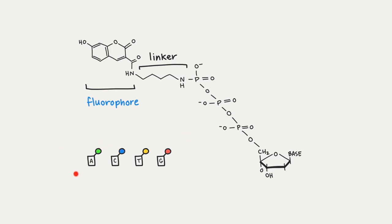For example, adenine is green, cytosine is blue, thymine is yellow, and guanine is red. So we can tell them apart and this allows the detector to identify which base is being incorporated.